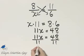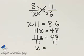The left side, I have 1x or simply x. And the right side, I have 48 over 11. That will not simplify, so you can leave it as the improper fraction, 48 over 11.